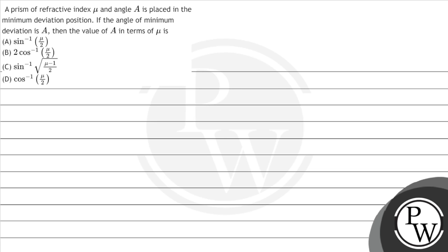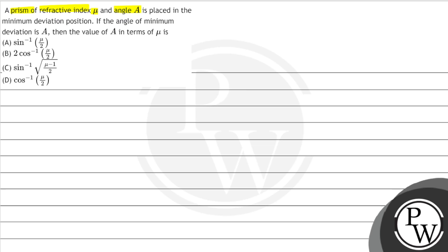Hello, let's read the question. The question says: a prism of refractive index mu and angle A is placed in minimum deviation position. If the angle of minimum deviation is A, then the value of A in terms of mu is?